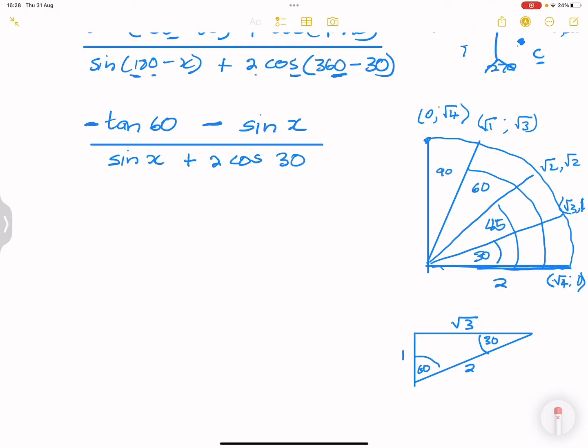So let's put in our values. Negative tan 60. Now tan 60, let's use our fan diagram. But what is tan? Tan is y over x, so we go to 60 degrees. There's 60 degrees over there. So tan is y, root 3, over x which is square root 1, which is 1. So it means tan 60 is square root of 3.